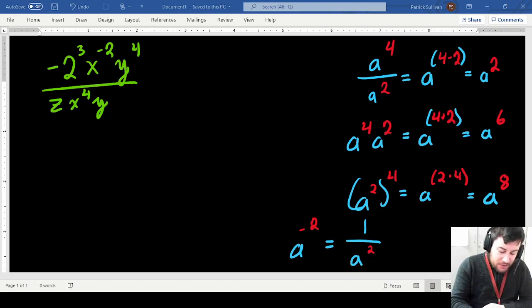So we're introducing a new rule, as you can see right here. When I have a negative exponent, you can't have a negative exponent in your final simplified answer.